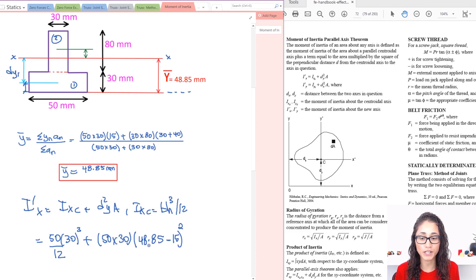So let me write it down. So we have 48.85 minus 15, which is this distance. The whole thing squared. Don't forget squared. Okay, so this is my first part here. We did that.